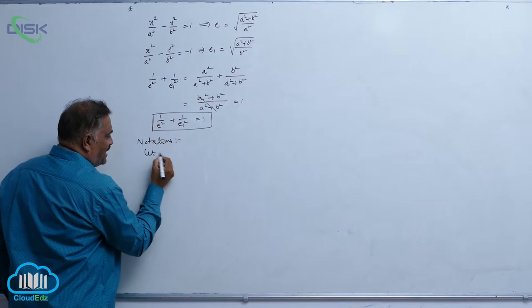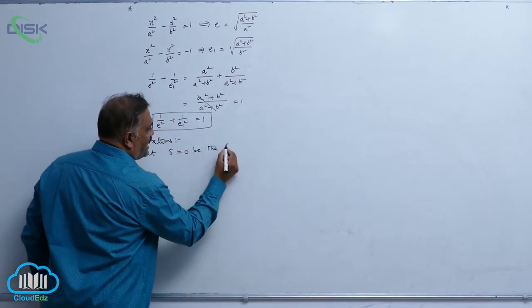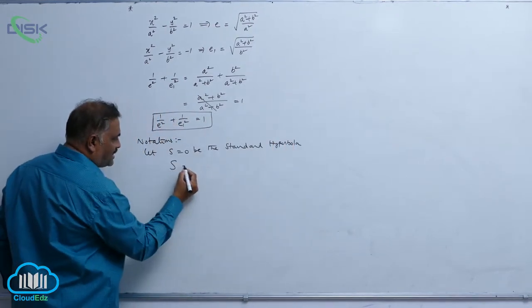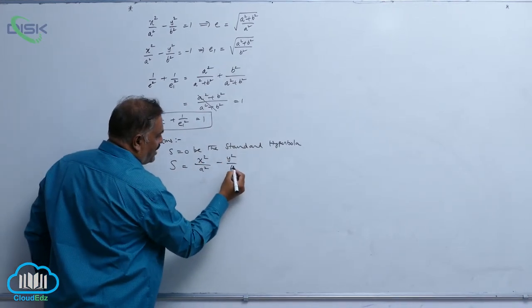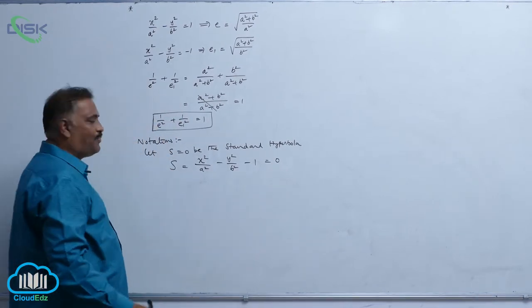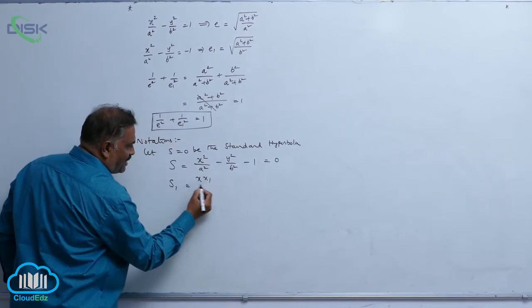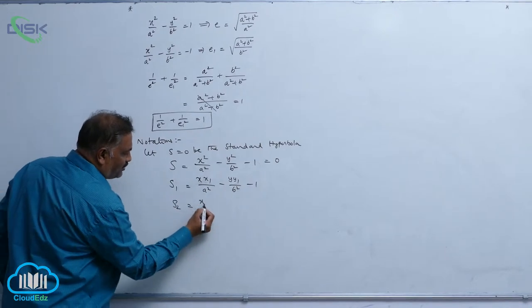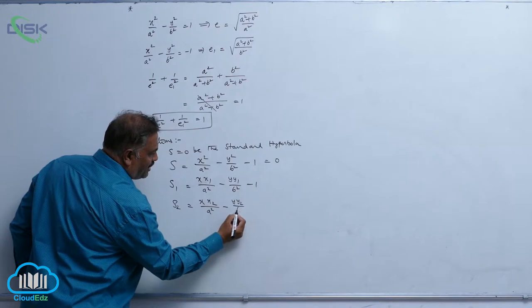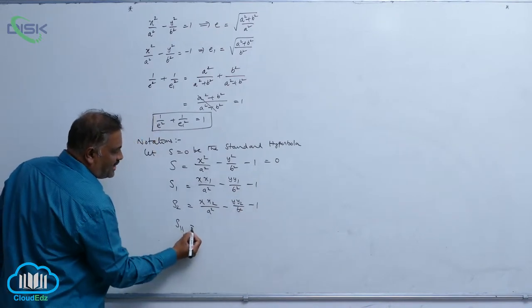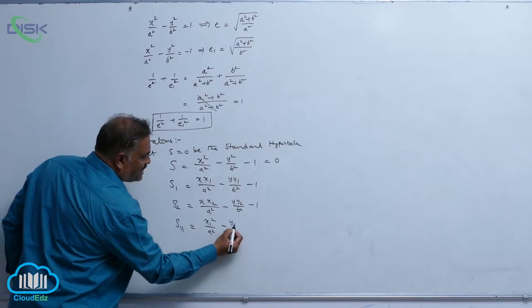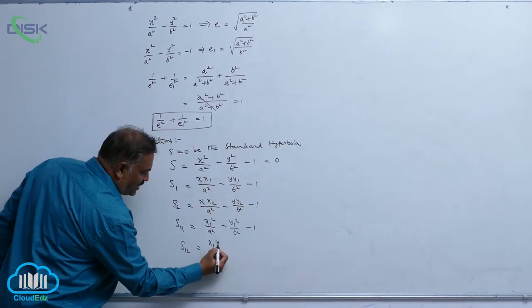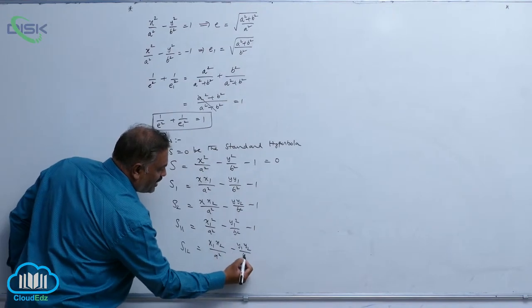Let S = 0 be the standard hyperbola, where S = x²/a² - y²/b² - 1 = 0. Let us write S₁ = xx₁/a² - yy₁/b² - 1, and S₁₂ = x₁x₂/a² - y₁y₂/b² - 1.